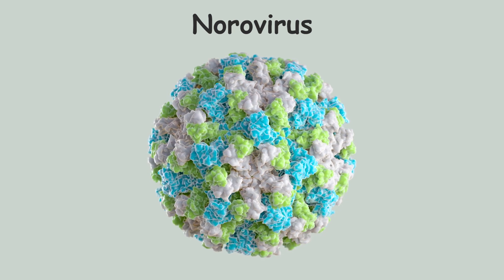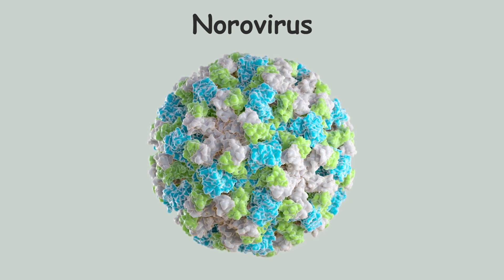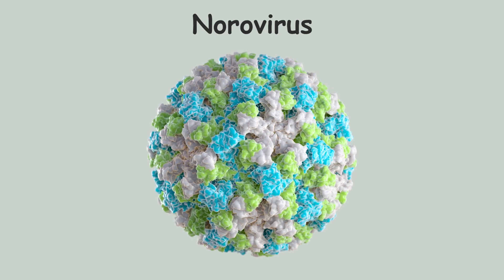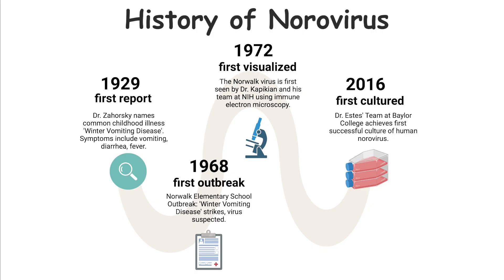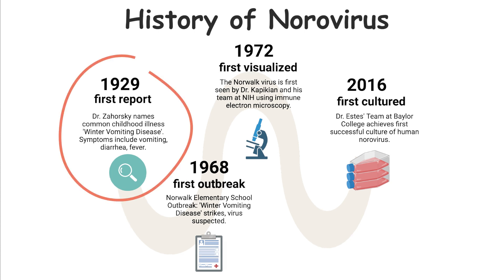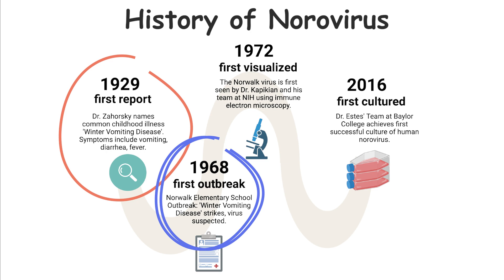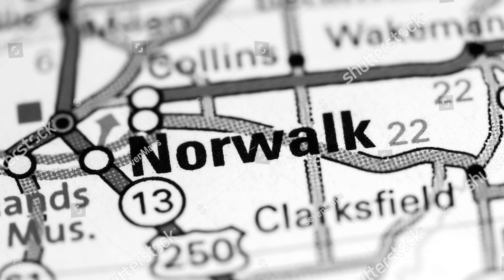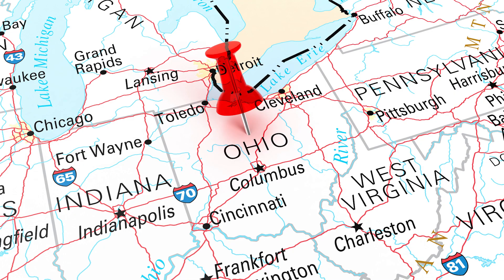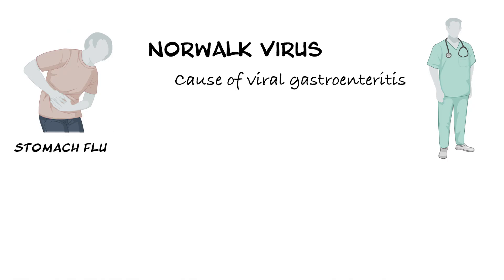This tiny but mighty virus has puzzled and challenged scientists for decades, but let's follow its journey. The norovirus story begins in 1929, when Dr. Zahorski named a common illness in kids 'winter-vomiting disease.' But this virus caught the world's attention only in the late 1960s, when a small town called Norwalk in Ohio faced an outbreak of acute gastroenteritis.